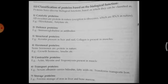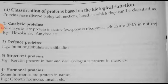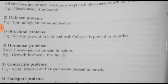Next is classification of protein based on biological function. Proteins have diverse biological functions based on which they are classified. Catalytic proteins: all enzymes are protein in nature except a few ribozymes, which are RNA in nature. Examples are hexokinase and amylase. Defense proteins protect our body — example: immunoglobulins. Structural proteins give a particular shape to the organism; keratin is present in hair and nails, and collagen is present in muscle. Hormonal proteins, also called signaling proteins — examples include growth hormone and insulin.